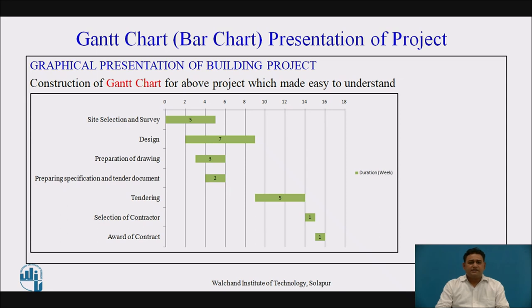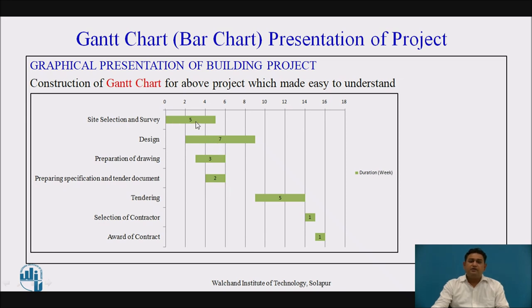This is a Gantt chart presentation of the project. The horizontal axis represents the duration and the vertical axis represents the activities. The green color bars have a certain thickness only for representation purposes, but the length of each bar represents the time required for the completion of the activity. The numbers shown on each bar — 5, 7, 2, 2, 3 — are the times required for the completion of each particular activity.